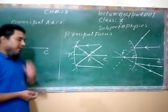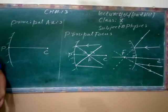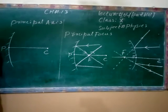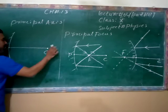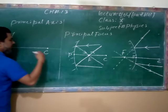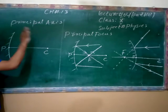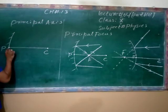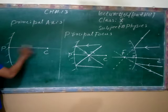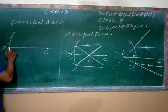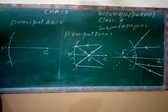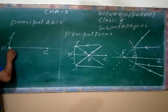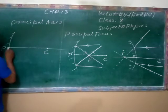The next topic is the principal axis. The principal axis is a straight line that passes through the pole of the mirror and the center of curvature. This line can be extended to infinity in both directions.